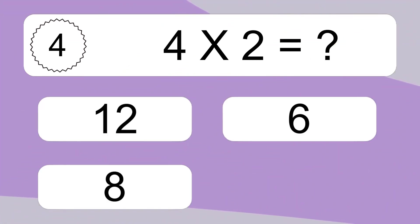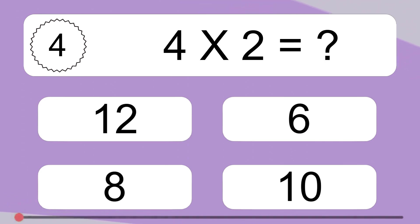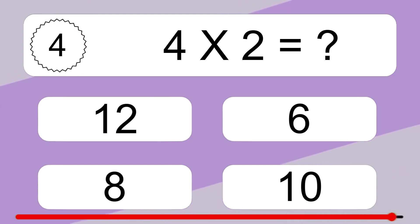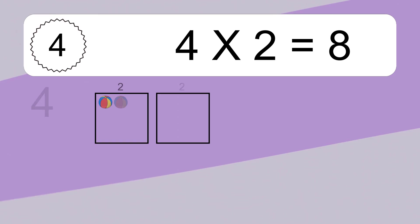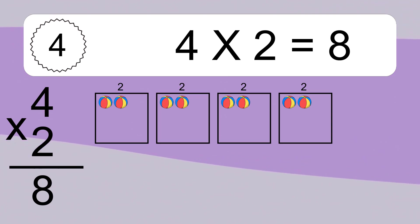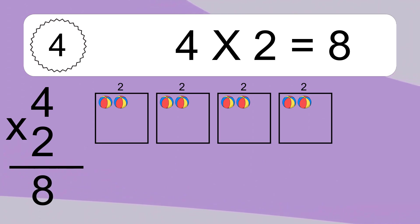4 times 2 equals what? We have 4 boxes, and each box has 2 colorful balls inside. If you count all the balls in all the boxes together, you will have 4 times 2 balls. This equals 8 balls.